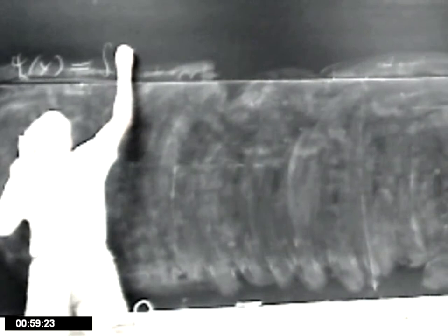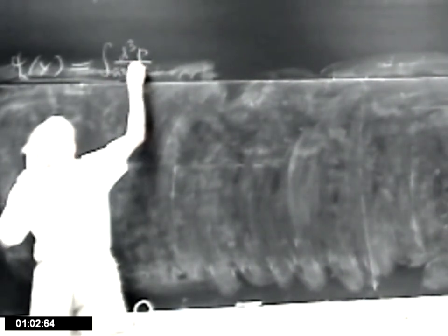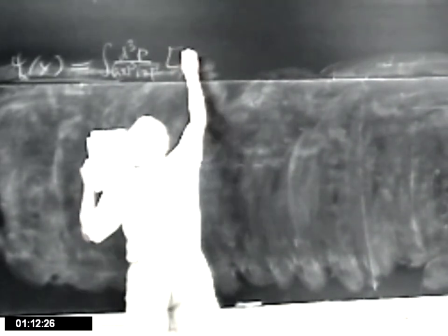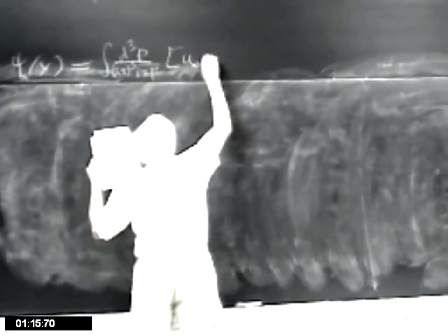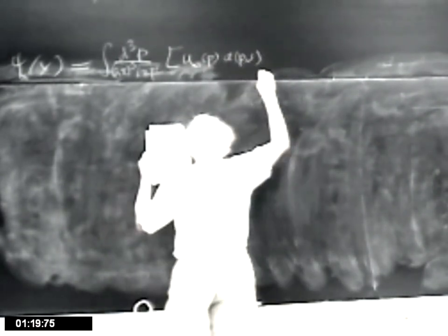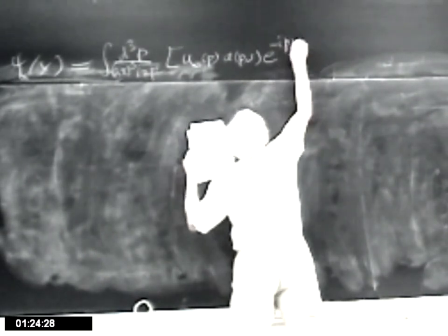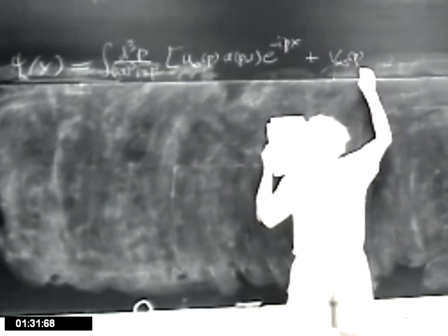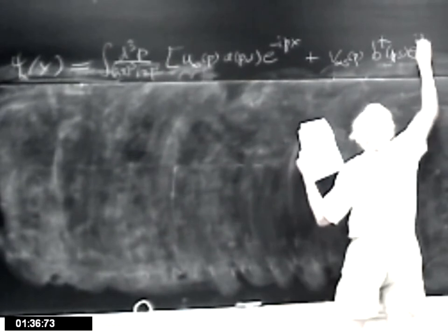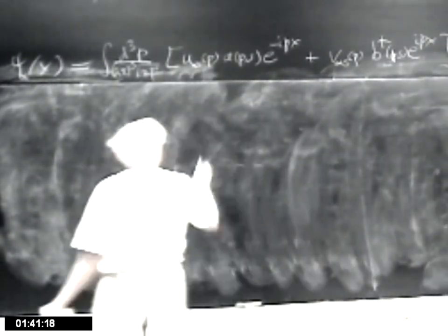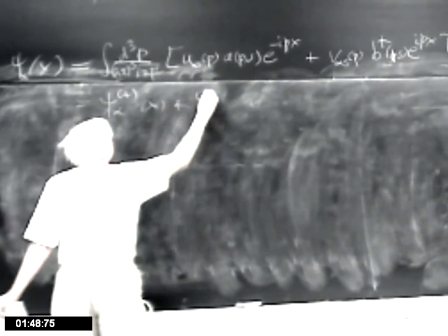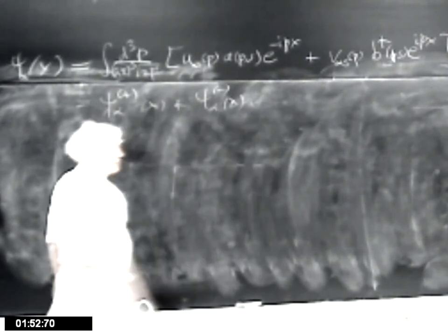Let me write a subscript: alpha goes from 1 to 4, integral d³p over (2π)³ root 2 E(p). This is then u_α^s(p) a(p,s) e^{-ipx} plus v_α^s(p) b†(p,s) e^{ipx}. This is psi-plus, and the second one is psi-minus. I put in the subscript alpha for clarity.